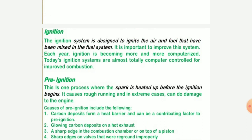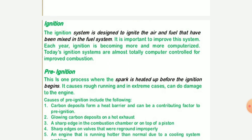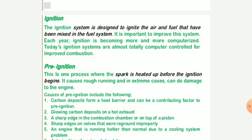The ignition system is designed to ignite the air and fuel that have been mixed by the fuel system. If pre-ignition occurs, the fuel comes into the combustion chamber and mixes with the pre-burned fuel. It burns together with the new fuel, and in this way a mixture of pre-burned and after-burned fuel is created, causing an uncontrolled stage of combustion.